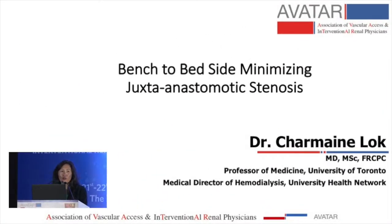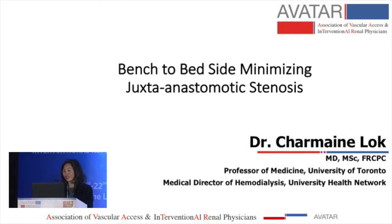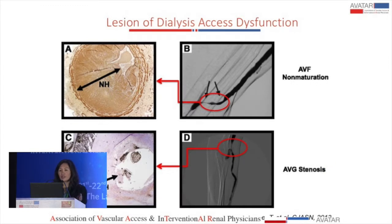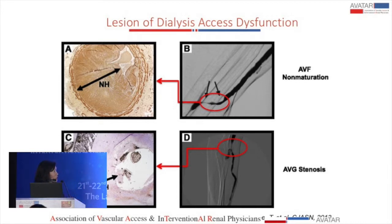I think we're on the home stretch and I will try my very best to keep us focused on vascular access. My talk is on bench to bedside, minimizing juxtanastomotic stenosis, and it is really important because we know that it is the stenosis that is the lesion that causes dialysis access dysfunction. Pathologically we see neointimal hyperplasia in the fistula, which is clinically manifested by AV fistula maturation and dysfunction, and radiologically we see this stenotic lesion.